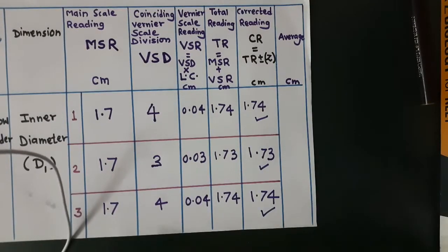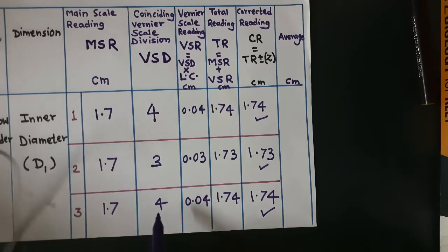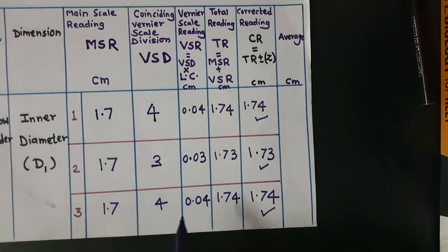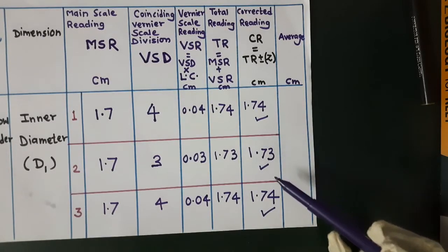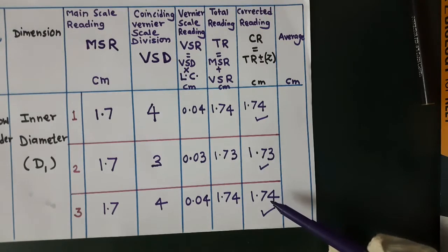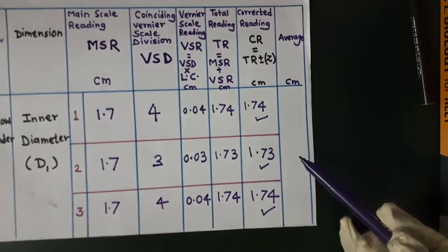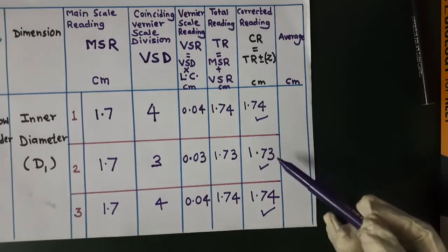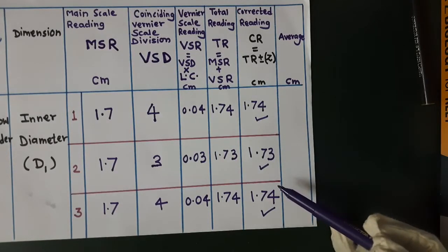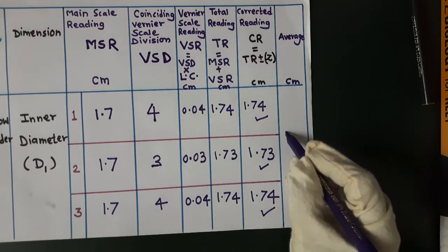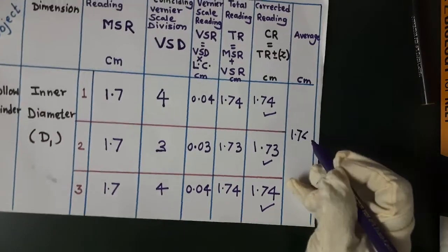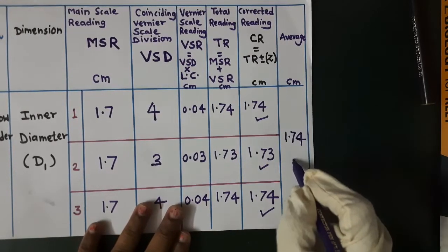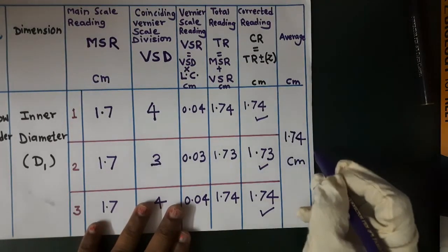In the same way, we have taken the third reading. We get 3 readings: 1.74, 1.73, and 1.74. The average of these 3 readings is the addition of the three readings divided by 3, giving 1.74 centimeter. This is the average inner diameter reading.